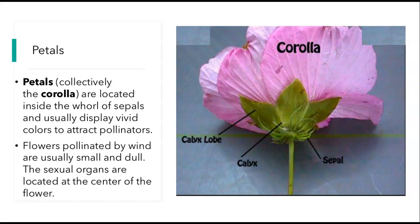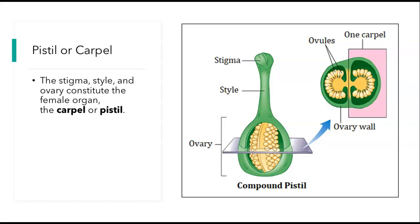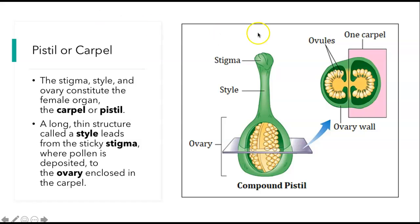The sexual organs of the flower are located at the center. The first is the pistil, or carpel — one unfortunate thing is that the same structure is given multiple names. The stigma, style, and ovary constitute the female organ, which is called the carpel or the pistil — they're the same term. Here is the ovary, here is the style, and here is the stigma, and this entire thing is the carpel or the pistil. It's a long, thin structure called a style that leads from the sticky stigma, where pollen is deposited, and the pollen tube grows down the style into the ovary, which is enclosed in the carpel.